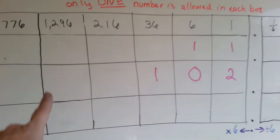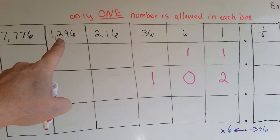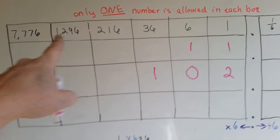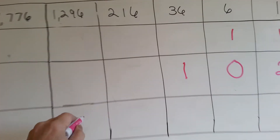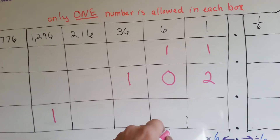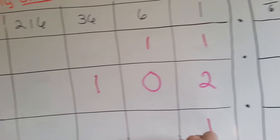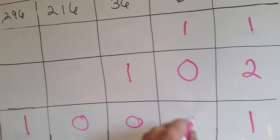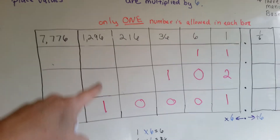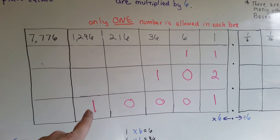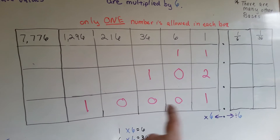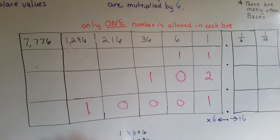If you wanted to have 1,297, you'd have 1 of the 7,776 column — none of the others — and 1 of the ones, putting zeros as placeholders. That would be 1,297: a 1,296 plus one more. That's what it would look like to write 1,297 in base 6.